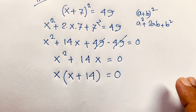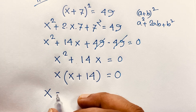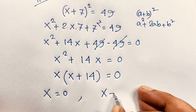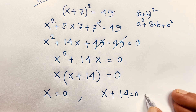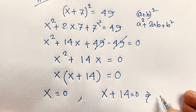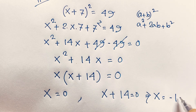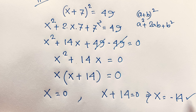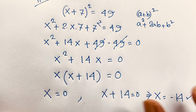Now x is common, so x(x + 14) = 0. We find two cases: first case x = 0, second case x + 14 = 0, so x = -14. Our final answer is x = 0 and x = -14.